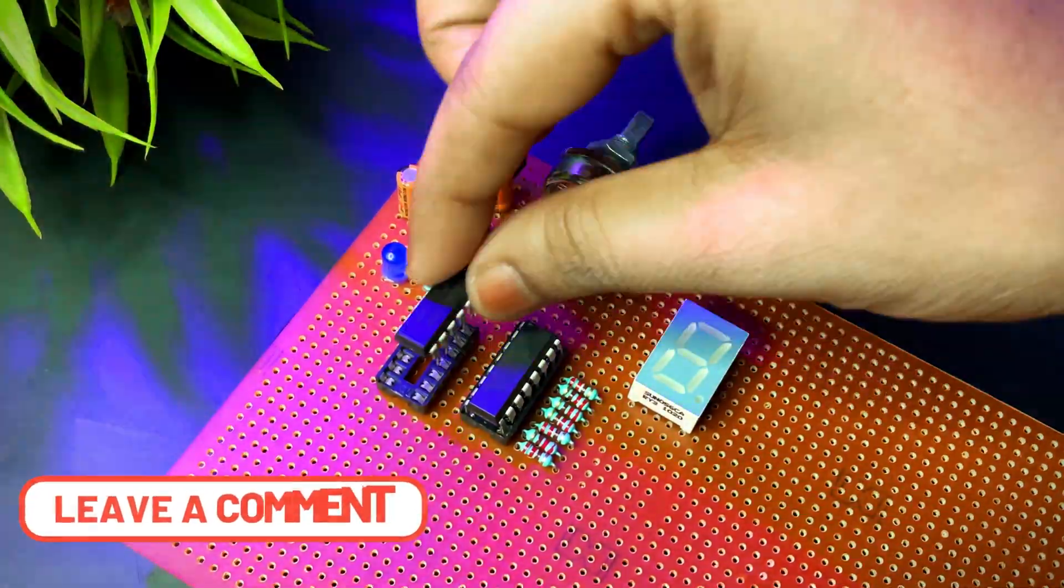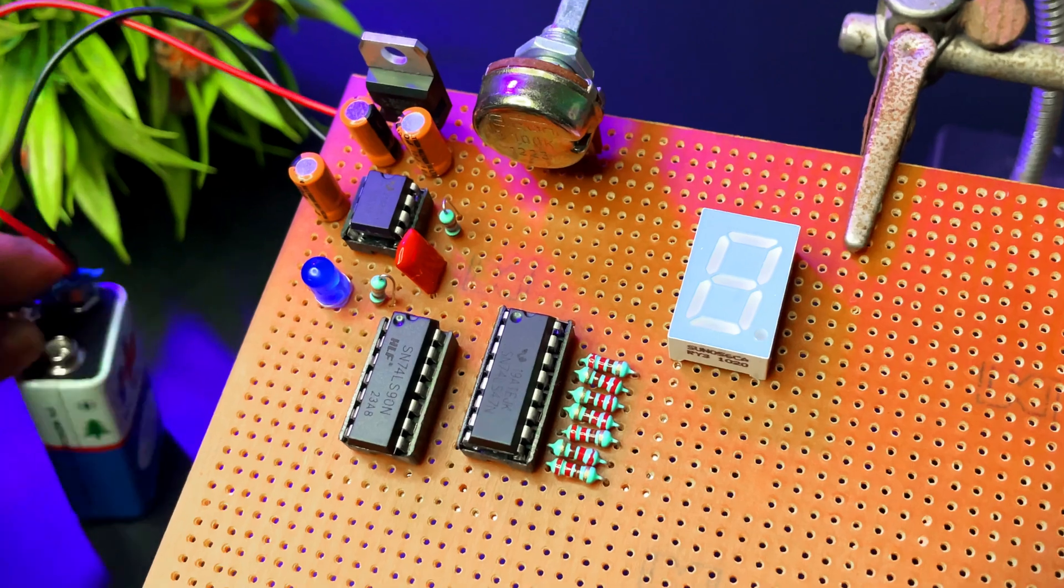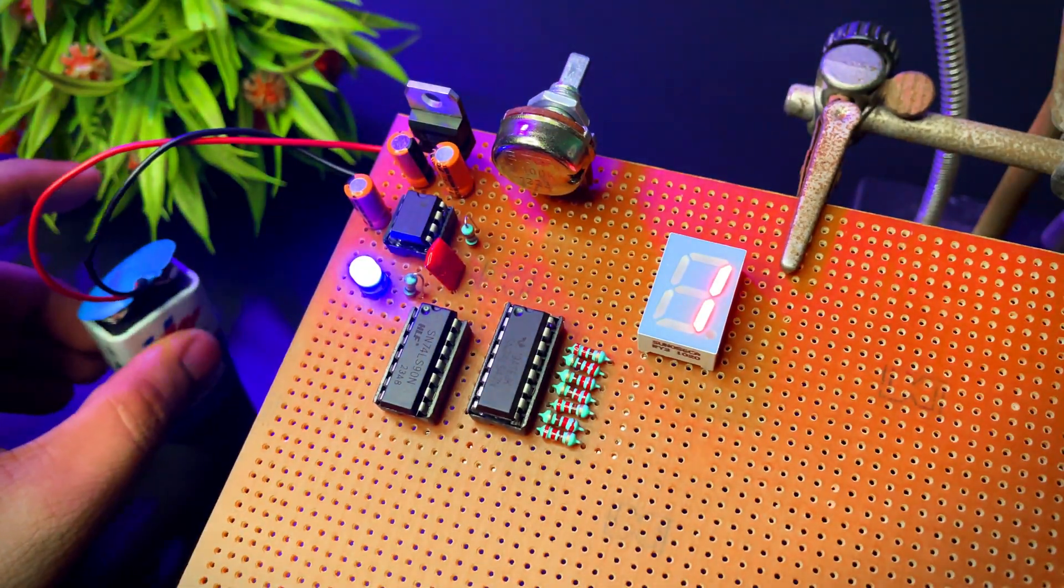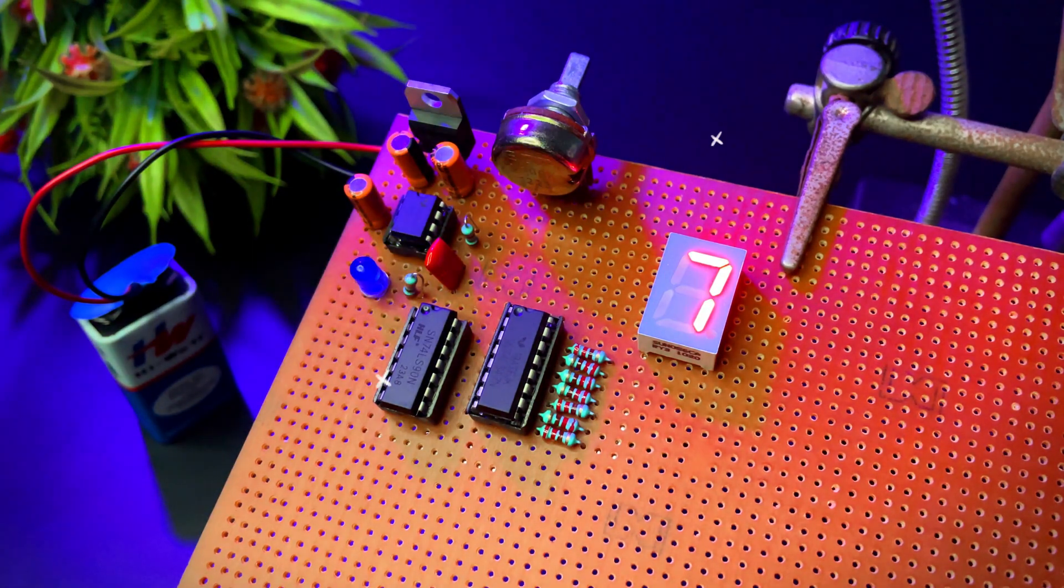Guys, if you have any queries, comment down below. Now let's check the circuit. Is it working or not? Here's the single digit counter circuit in action. As the pulses are fed in, it starts counting from 0 to 9. And it's working perfectly.